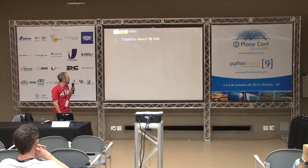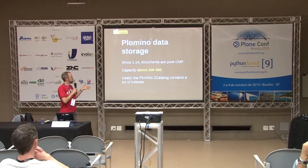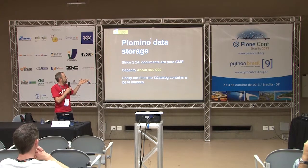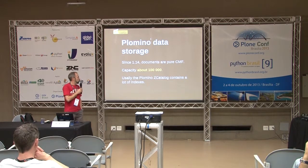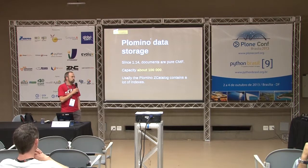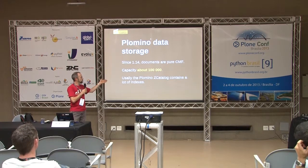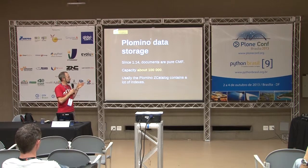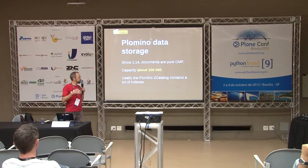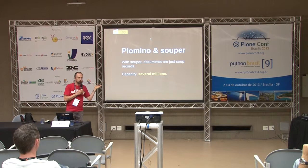To improve that, we moved to pure CMF — a BTree folder, a CMF BTree folder, CMF objects in there. And we are about 100,000 is kind of okay, but if you want to go higher it can be difficult. You have to optimize stuff, make sure you don't have too many indexes in your catalog, because Plomino uses a local catalog for every database, and it can get quite big and slow everything down. Now, with Souper, we can reach millions — millions of records in your ZODB — and it just works really nicely.